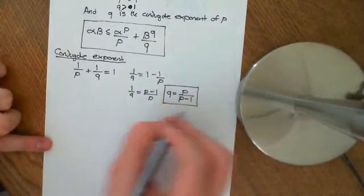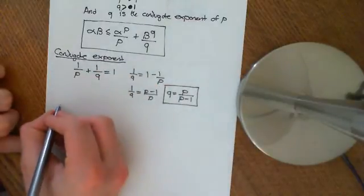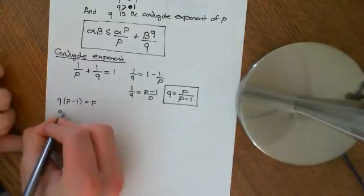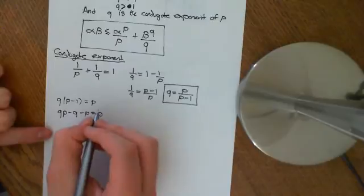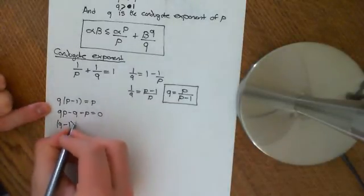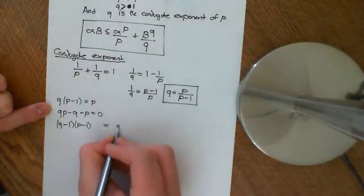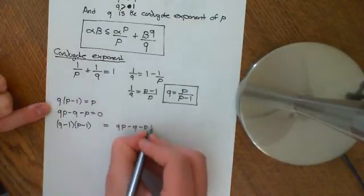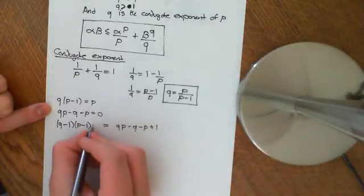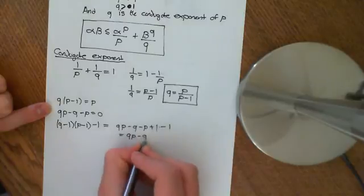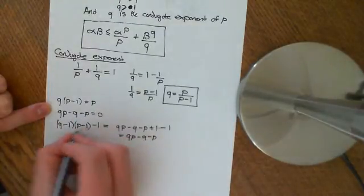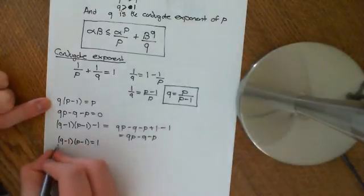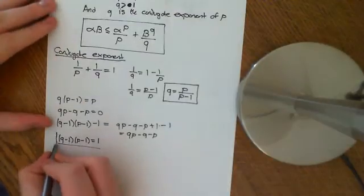Let's get another useful formula from the conjugate exponent relationship. Multiplying up: q times (p minus 1) equals p, expanding gives qp minus q. Bringing p to the other side: qp minus q minus p equals 0. We can factorise this as (q minus 1)(p minus 1), which expands to qp minus q minus p plus 1. So (q minus 1)(p minus 1) equals 1. That's a useful formula when p and q are conjugate exponents.